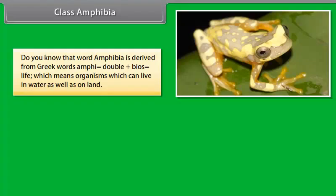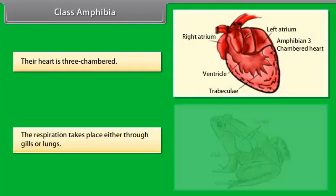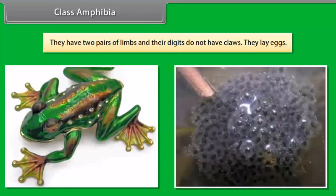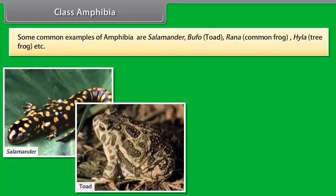Class Amphibia. The word Amphibia is derived from Greek words 'amphi' meaning double, plus 'bios' meaning life, which means organisms which can live in water as well as on land. They are evolved from fish but have mucus glands in the skin in place of scales. Their skin is smooth, slippery, and rich in mucus. Their heart is three-chambered. Respiration takes place either through gills or lungs. They have two pairs of limbs and their digits do not have claws. They lay eggs. Common examples are Salamander, Bufo (Toad), Rana (Common Frog), and Hyla (Tree Frog).